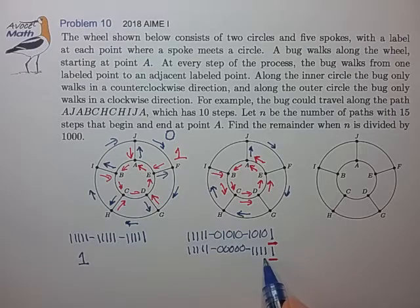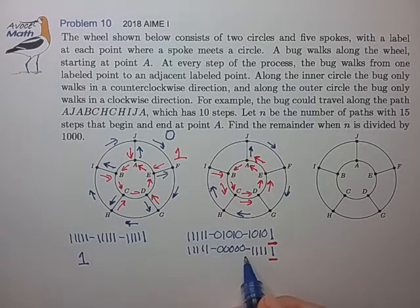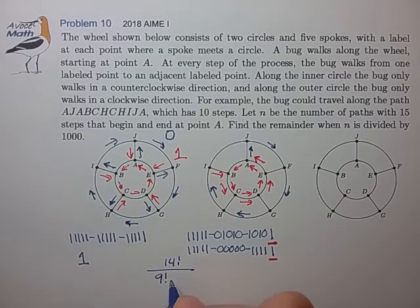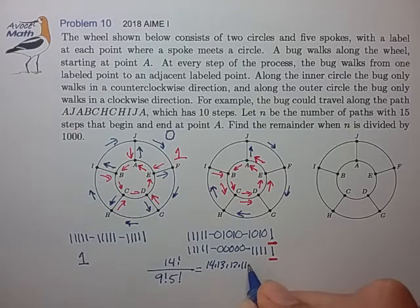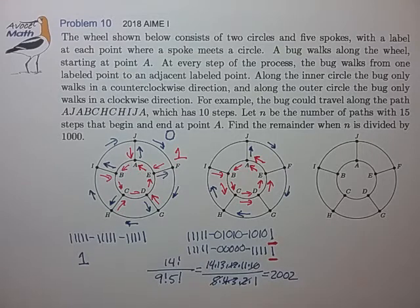So we're free to choose the locations of the 1s and 0s for the first 14 positions, and that looks a lot like a spelling problem with identical letters. We have 14 characters: 9 of which are 1s and 5 of which are 0s. The number of ways to arrange them is 14 factorial divided by 9 factorial times 5 factorial, which works out to 14 times 13 times 12 times 11 times 10 divided by 5 factorial. After cancellations, 11 times 13 times 14 equals 2002.